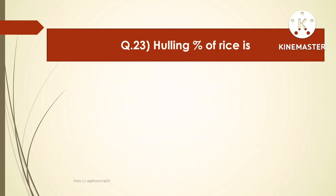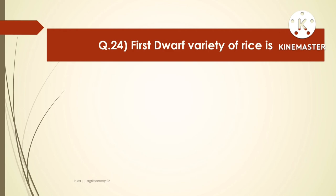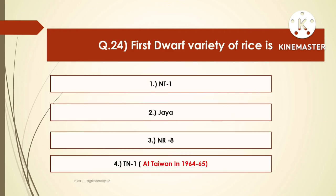The next question is: the hulling percent of rice is — options are 66%, 33%, 85%, or 45%. The hulling percent of rice is 66%. The next question is: the first dwarf variety of rice is — options are NT1, Jaya, NR8, or TN1. The right answer is TN1. It was developed in Taiwan in 1964-65. And Jaya is the miracle rice of India.